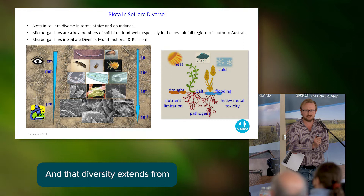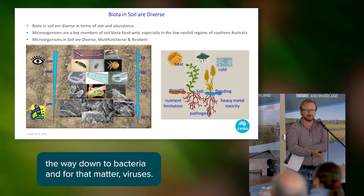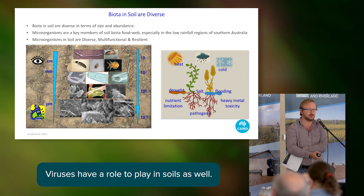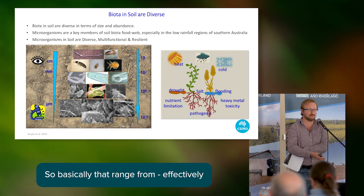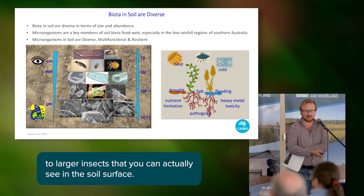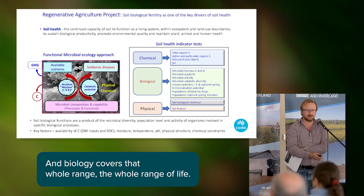Soils are very diverse, doing an awful lot of different things. That diversity extends from the macro diversity - soil invertebrates - right the way down to bacteria and viruses. We've all seen how impactful one virus can be in the past 18 months, and viruses have a role to play in soils as well, interacting with the soil community. That range goes from effectively not much more than a few strands of DNA in a protein all the way up to larger insects you can actually see on the soil surface.